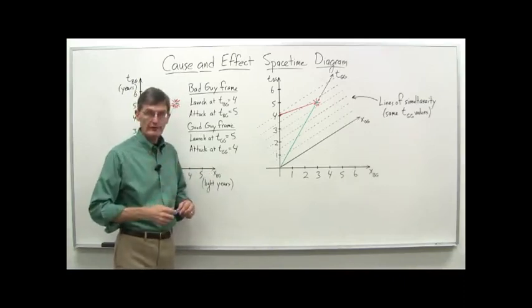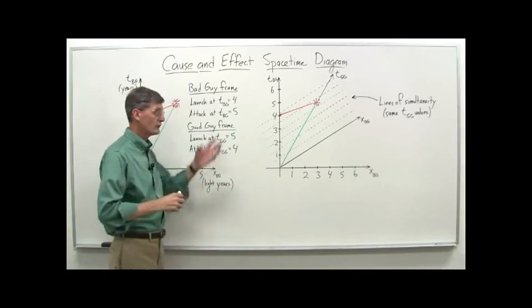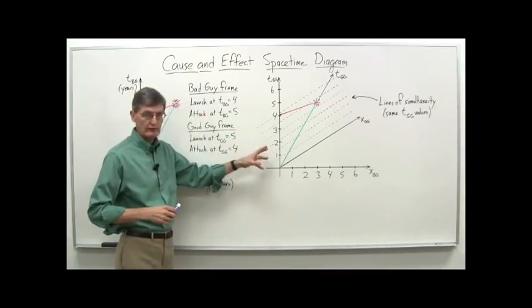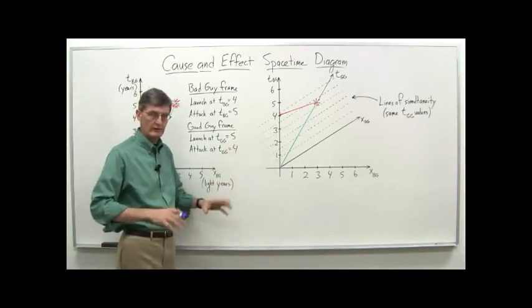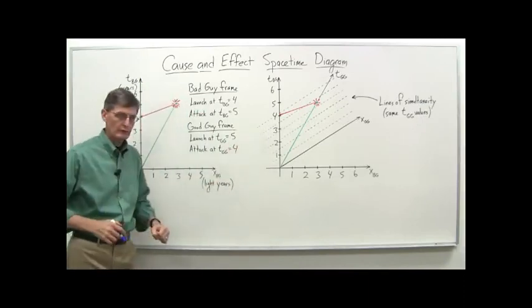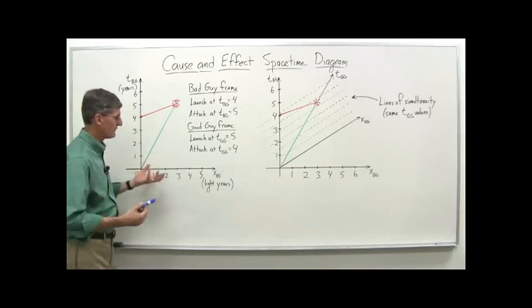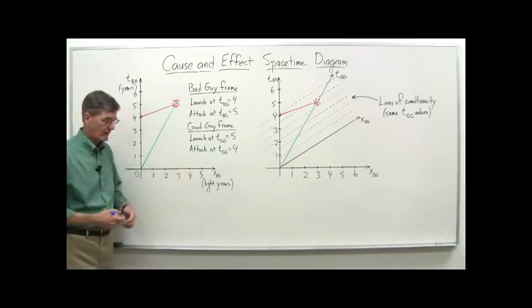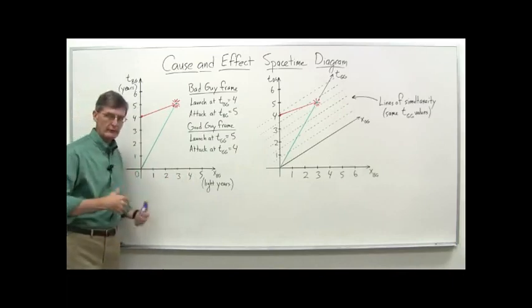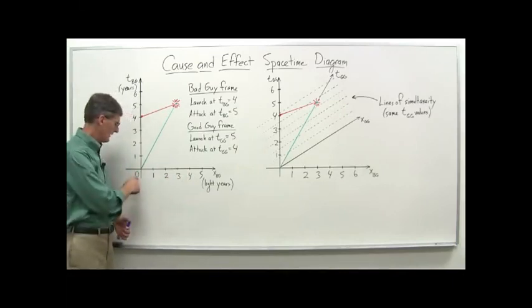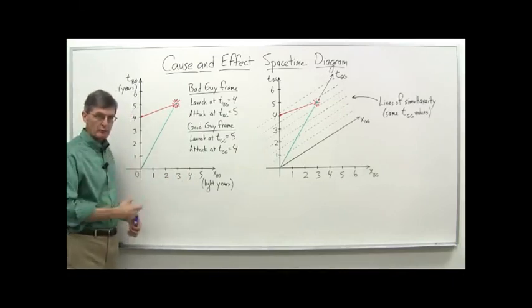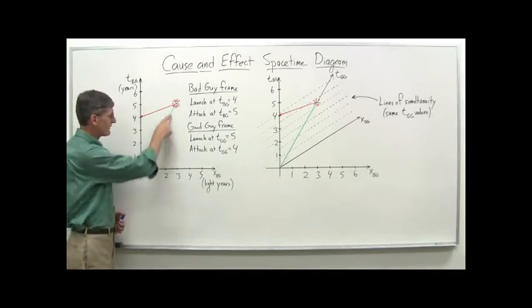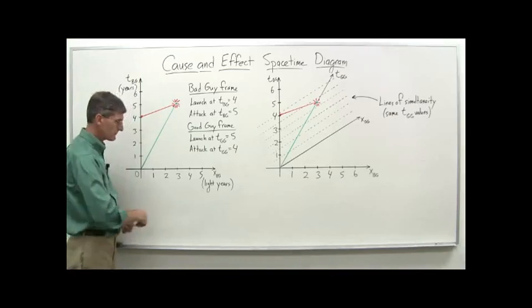So let's just review what that situation was, and then we're also going to apply our space-time diagrams to the situation and visualize it in another way to get a better idea of what was going on. So remember, the situation we set up was that we had the bad guys and the good guys, and they signed a treaty at the bad guys' planet in year zero, at which point the good guys took off in their ship at 0.6 times the speed of light.